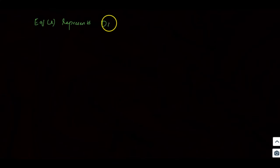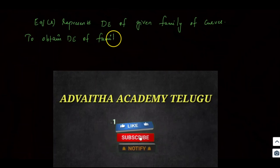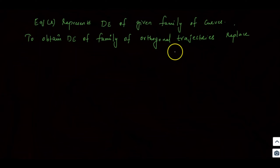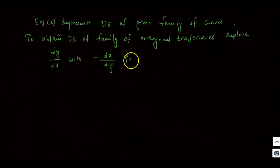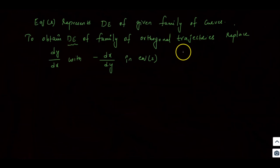Equation 2 represents the differential equation of the given family of curves. To obtain the differential equation of the family of orthogonal trajectories, we replace dy/dx with -dx/dy in equation 2. So dy/dx = -y^(1/3)/x^(1/3) becomes -dx/dy = -y^(1/3)/x^(1/3).